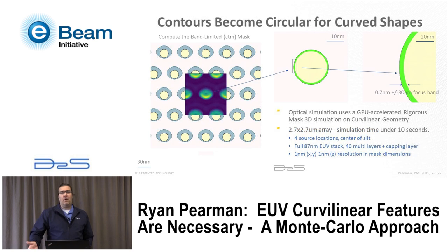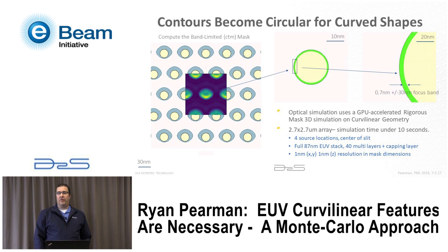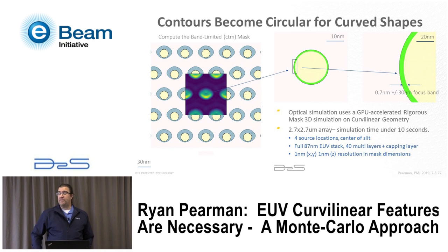This tells you that the simple rectangle isn't the optimal solution — you need a much more complicated rectilinear solution to actually circle the circle. But instead of doing that, we might as well go all the way to a curvilinear feature. You can see the same style of correction — elongated and shifted — and the band-limited mask now looks circular. When you zoom in to the contour, these contours actually turn out to be circular.